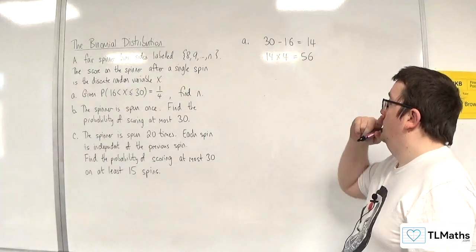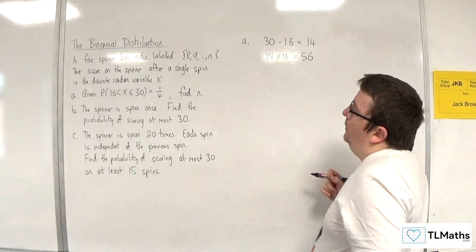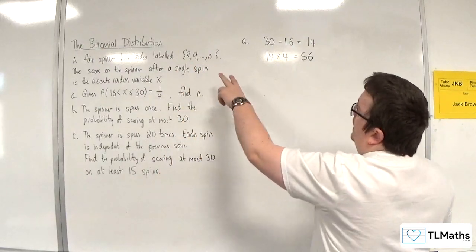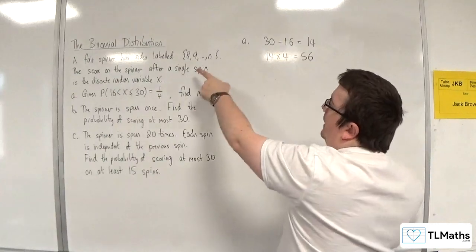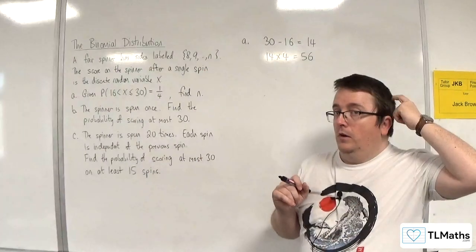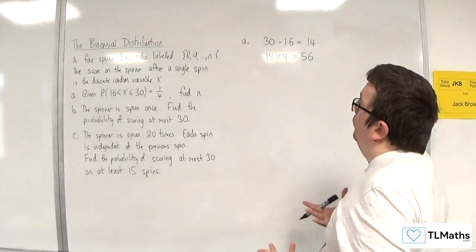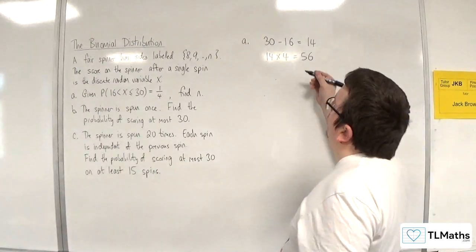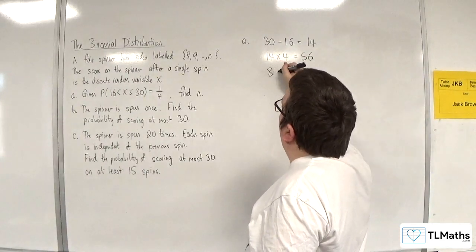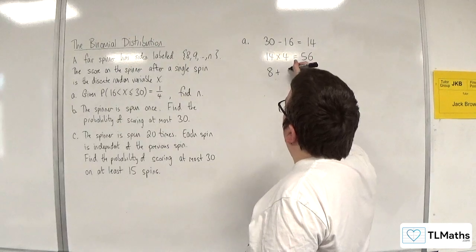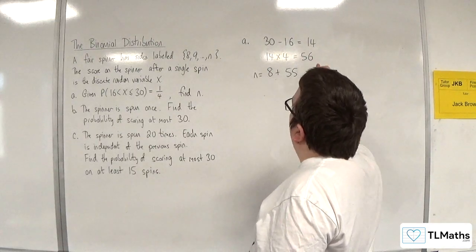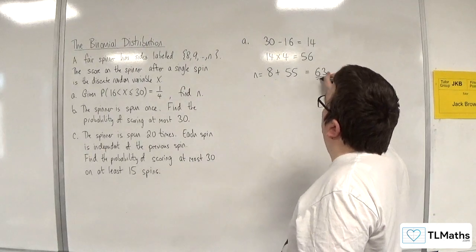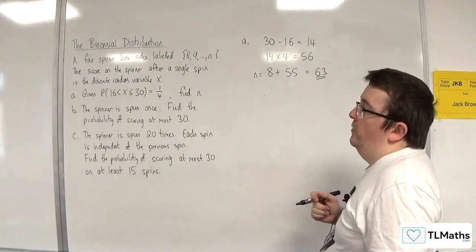Now we need to be a little bit careful with working out n here, because it's not just 8 plus 56, because that wouldn't include the 8. We would get one too many. So essentially we need to do 8 plus 55 is equal to n, and so that's equal to 63. So n is 63.